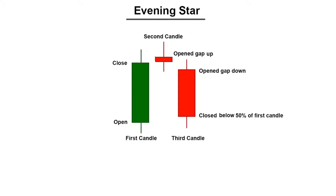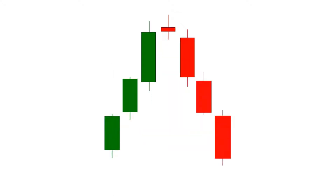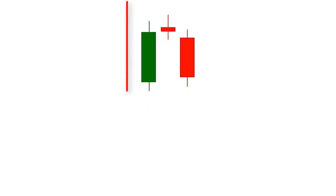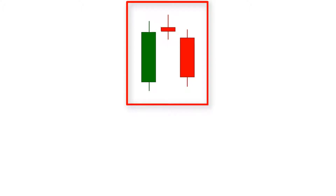Hey traders, welcome back to Easy Trading Tips. In this video tutorial, we will learn how to identify the perfect evening star candlestick pattern. The evening star candlestick pattern is a bearish reversal candlestick pattern that consists of three candlesticks marking a potential short-term reversal from an uptrend to a downtrend. Only a 100% perfect evening star pattern can turn an uptrend to a downtrend. Today we will learn how to identify it, so let's get started.